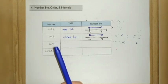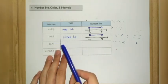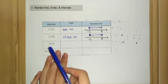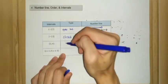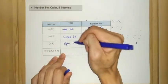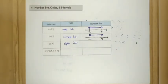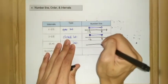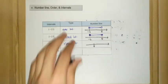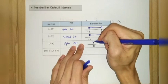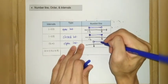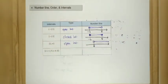For the third example, we go from 5 up to infinity with a curve bracket, so this is an open interval. On the number line, it starts with number 5 and goes up to infinity. Number 5 is not included, so we use an empty dot going straight up to infinity.